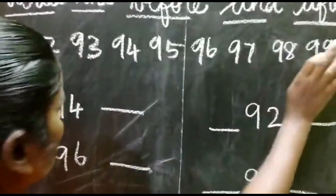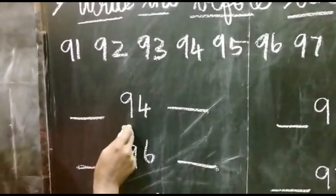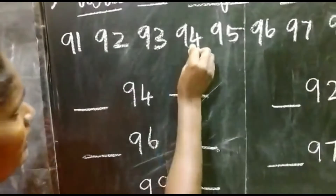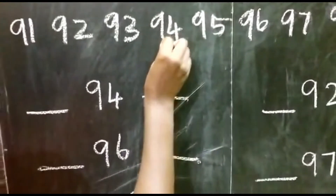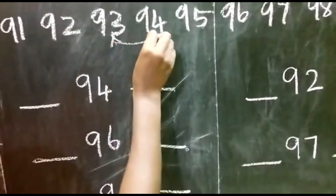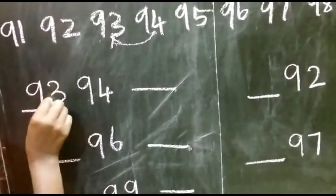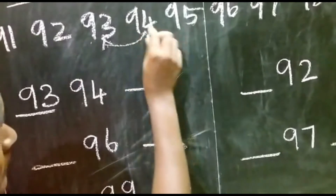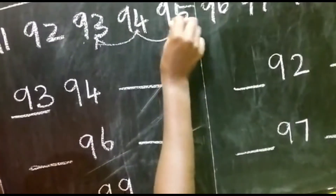91 to 100. Okay, the first number is 94. Here 4 is there. First you are going to write the before number of 94. Before number of 94 is 93. Now after number of 94 is 95.